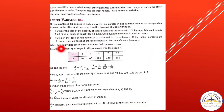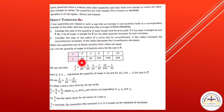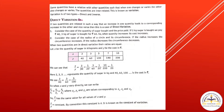Here an example is given where x is the quantity of sugar in kilograms and y is the cost in rupees. The values are: 2 kg costs 40, 3 kg costs 60, 5 kg costs 100, 7 kg costs 140, and 10 kg costs 200. If we increase the quantity of sugar in kilograms, the cost also increases.